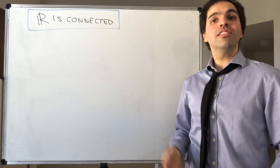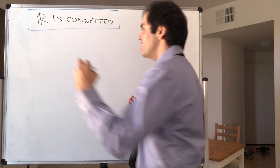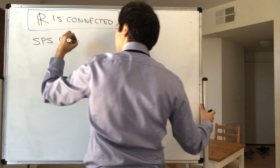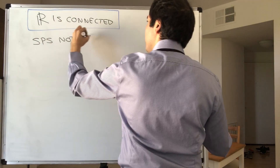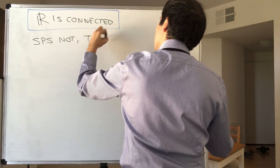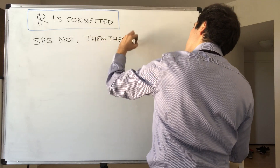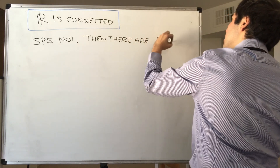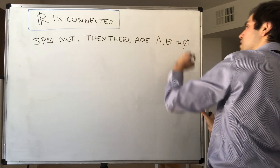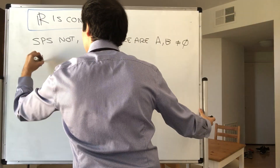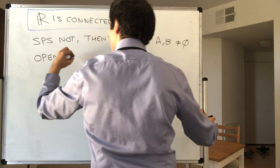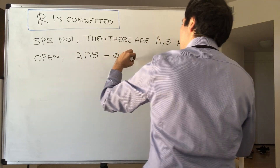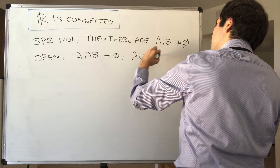How do we show this? Well, as usual, by contradiction. So suppose not. What does that mean? Then there are A and B — they are non-empty, open, disjoint. So A intersect B is the empty set, and A union B is all of ℝ.